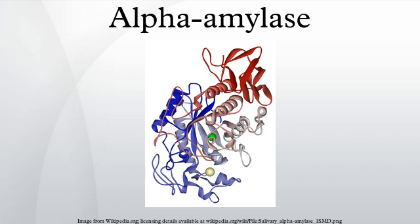Alpha-amylase is used in ethanol production to break starches in grains into fermentable sugars. The first step in the production of high fructose corn syrup is the treatment of corn starch with alpha-amylase, producing shorter chains of sugars called oligosaccharides. An alpha-amylase called Termamyl, sourced from Bacillus licheniformis, is also used in some detergents, especially dishwashing and starch-removing detergents.